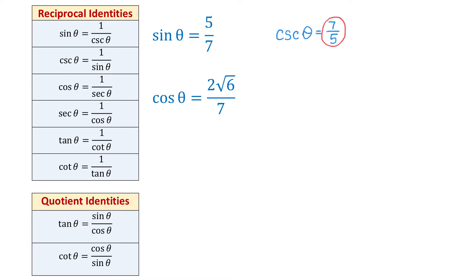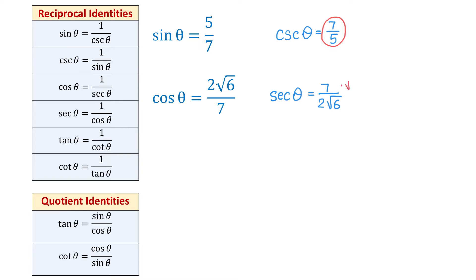The next two reciprocal identities are cosine of theta equals 1 over secant of theta, and secant of theta equals 1 over cosine of theta. These two functions are also reciprocals of each other. So if we know the value of cosine, we can flip this fraction and get the value of secant. Then secant of theta equals 7 over 2 square root of 6. Now we need to rationalize the denominator, so we multiply the numerator and denominator by square root of 6. In the numerator we will have 7 square root of 6, and in the denominator, square root of 6 times square root of 6 is 6, and 6 times 2 is 12, so the new denominator will be 12.